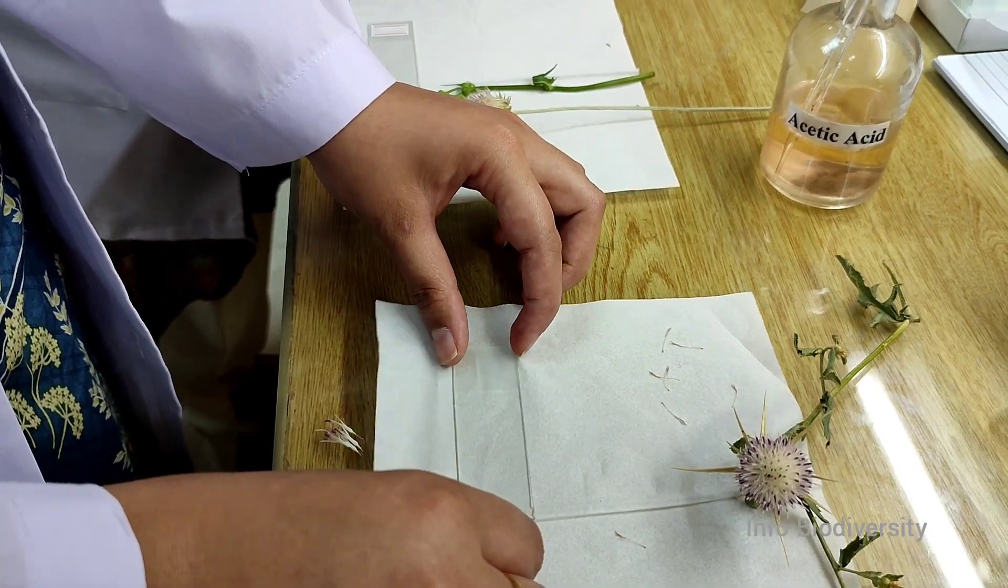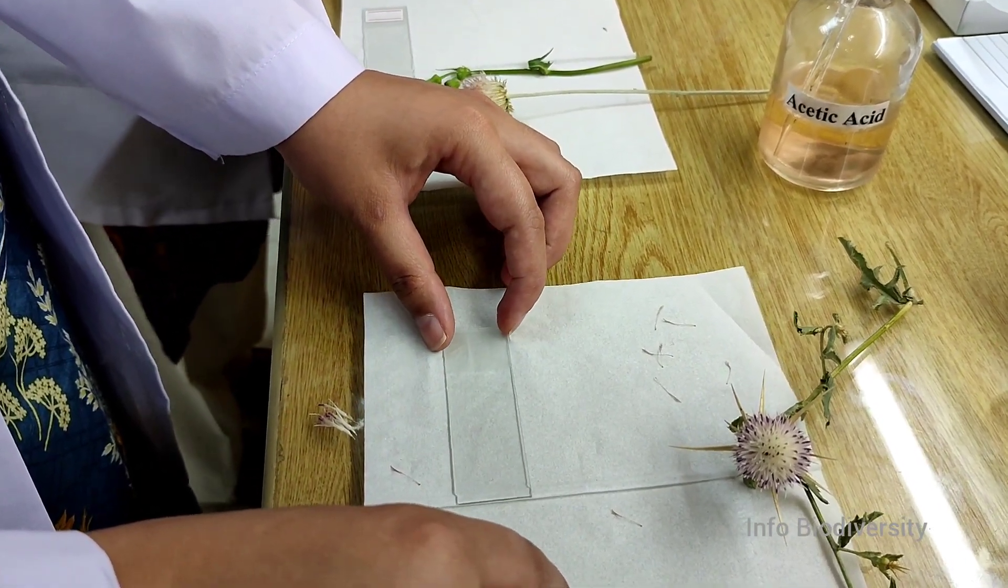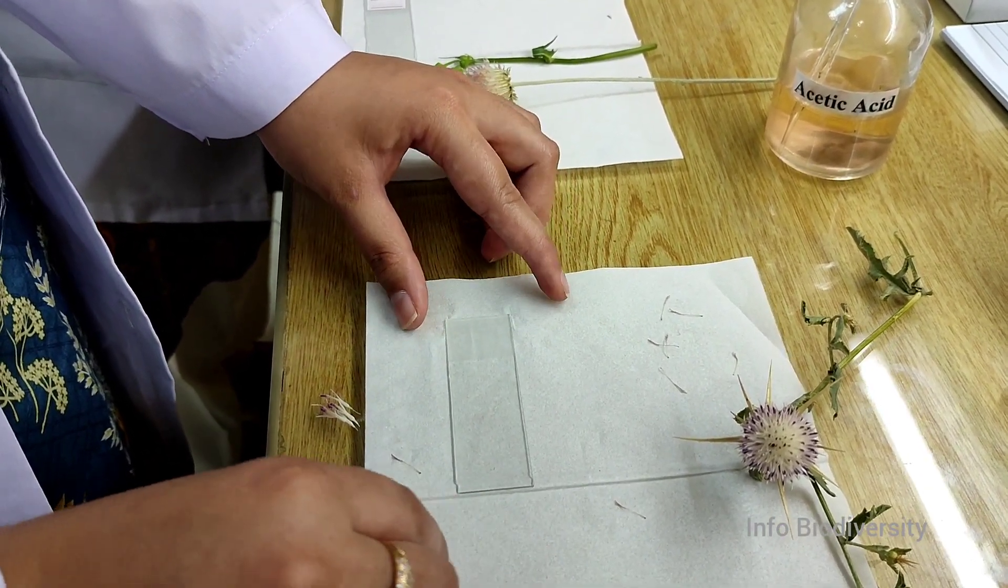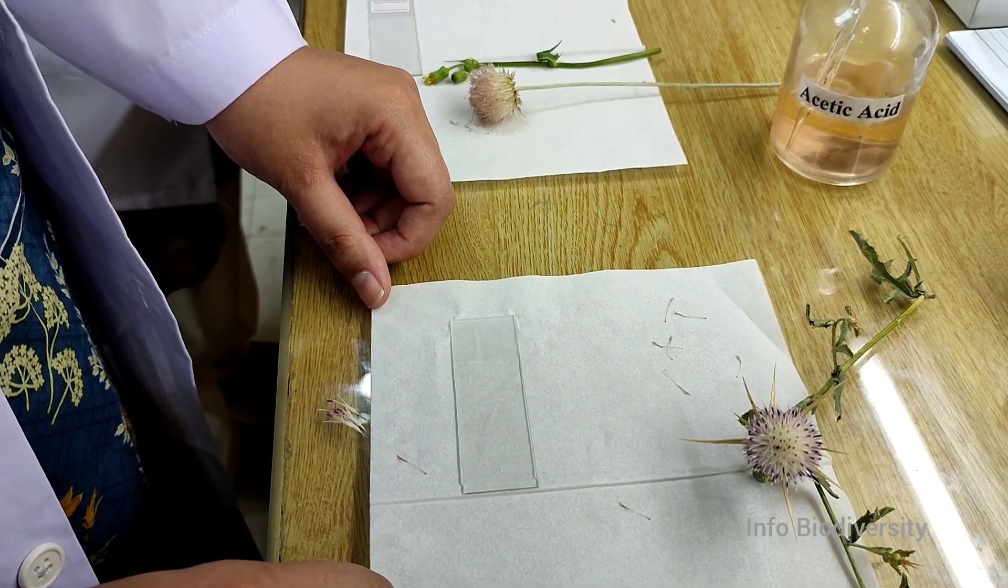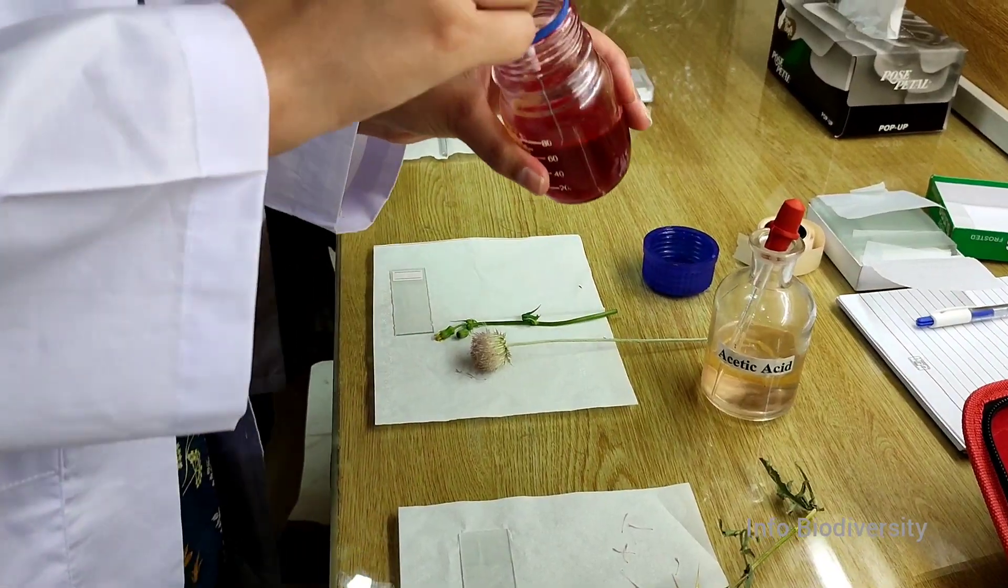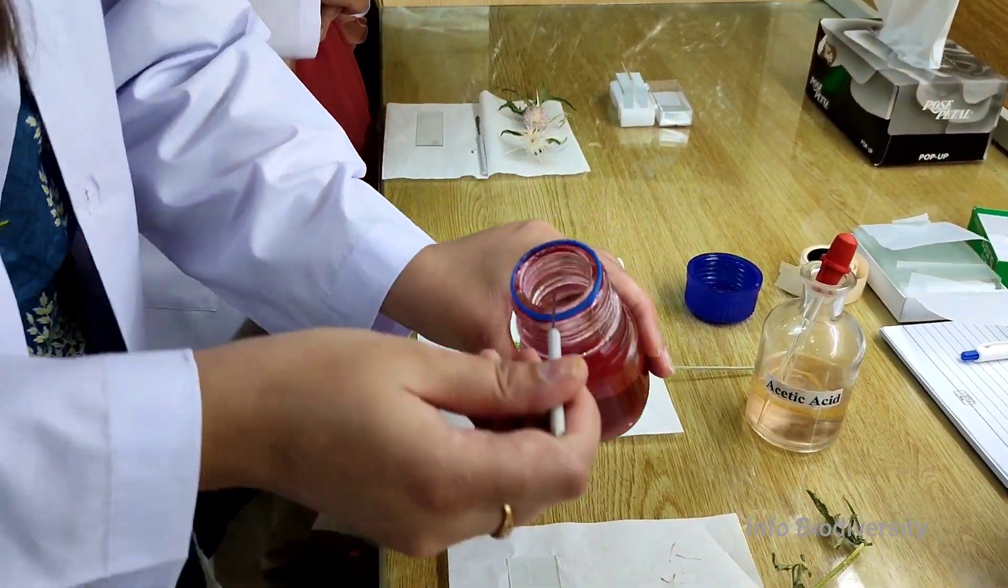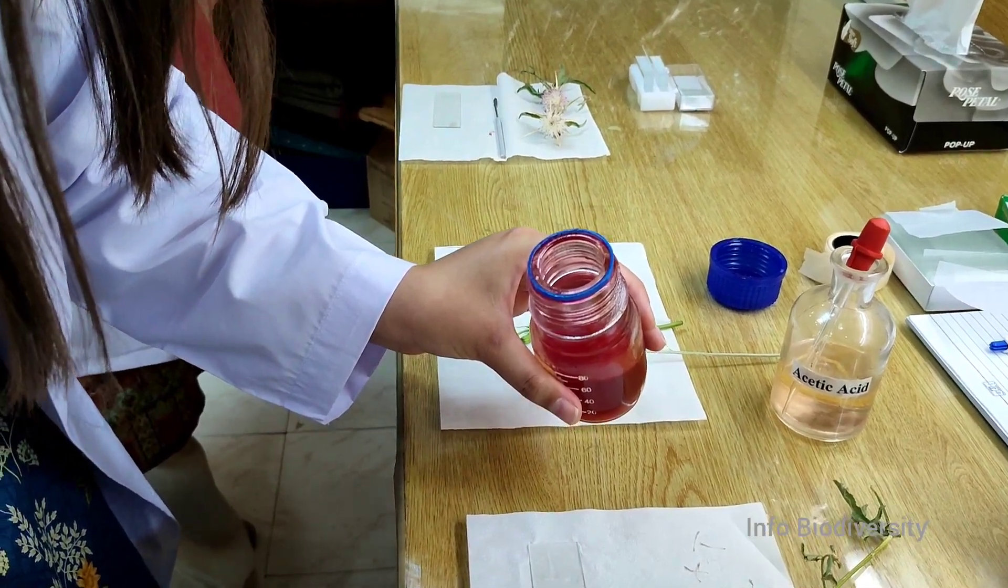After this, you have to leave the slide for a few minutes. Then it becomes dried and the acetic acid evaporates. After drying the slides, you can add a drop of glycine jelly. Glycine jelly is basically the stain that is used to stain the pollen.